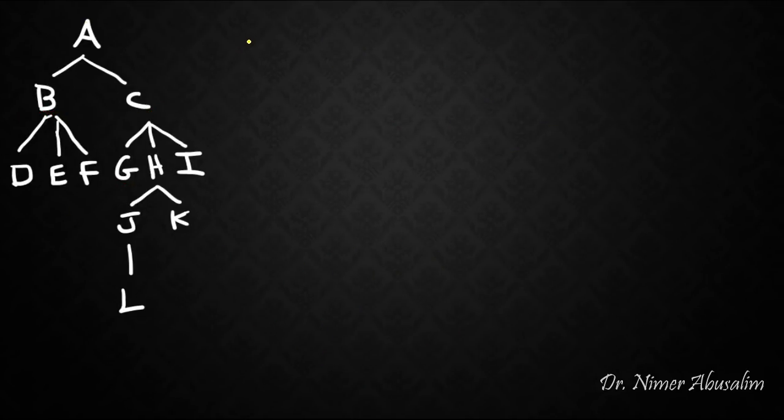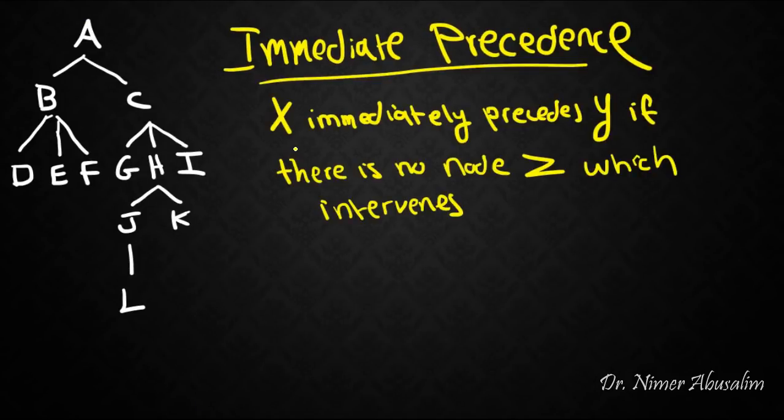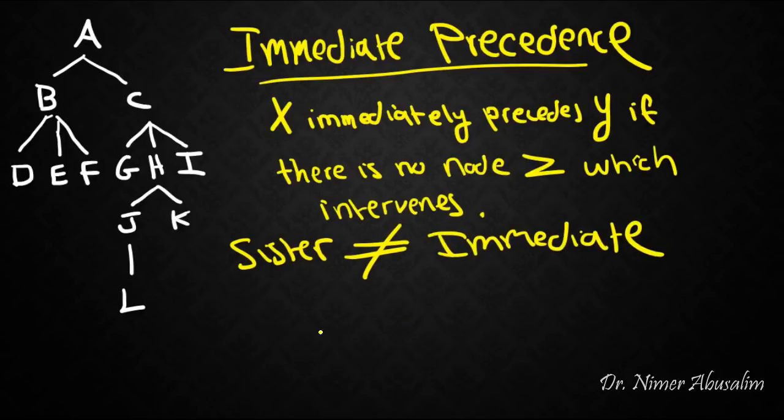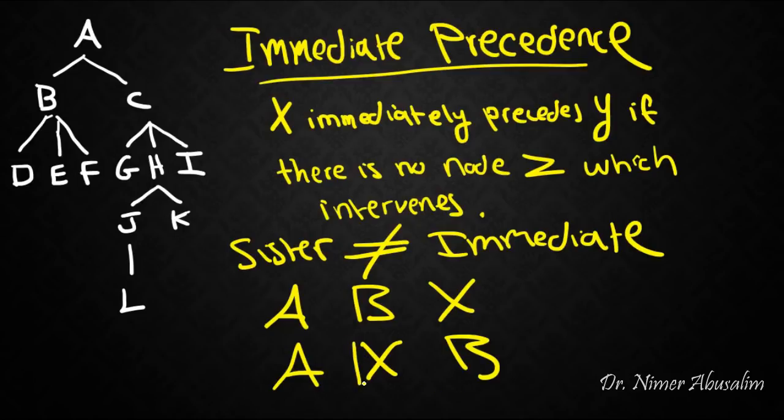The last type of precedence we want to talk about is called immediate precedence. So X immediately precedes Y if there is no node Z which intervenes between the two. It's very important here to understand that sister precedence is not the same as immediate precedence. So if we have node A, node B, and node X, A immediately precedes B. But in this case, A does not immediately precede B because X is in the way.